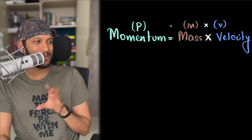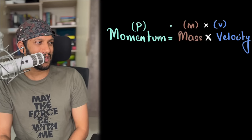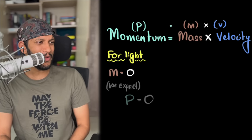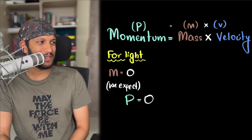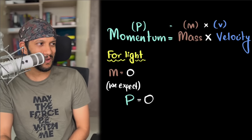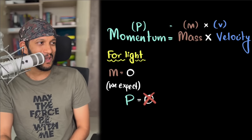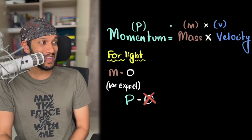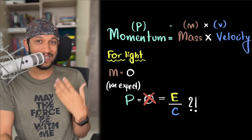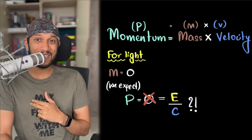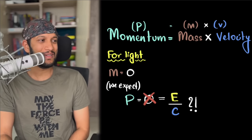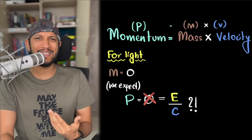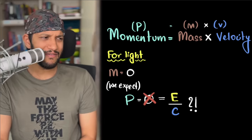Momentum is mass times velocity, and light has zero mass, so we would expect its momentum to be zero. But that's wrong — light happens to have a momentum, and its value is E, the energy of the light, divided by C, its speed. I always wondered how that made any sense, so I looked online and did find some derivations.